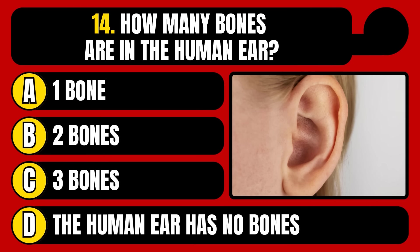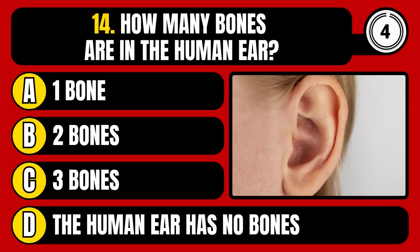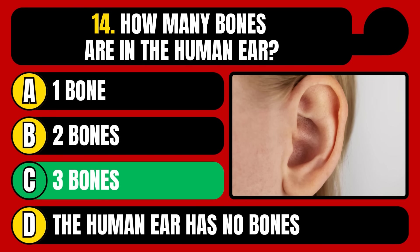How many bones are in the human ear? One bone, two bones, three bones, or the human ear has no bones? The correct answer is option C, three bones.